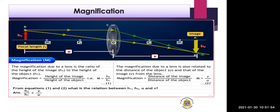Magnification can also be found using the distance of the object and the distance of the image. As we saw in ray diagrams, if the object is at an infinite distance we get a point image, but as it comes closer to the lens we get a magnified image. The formula is: m equals V upon U, where V is the distance of the image and U is the distance of the object.